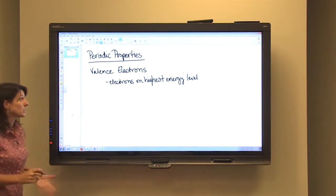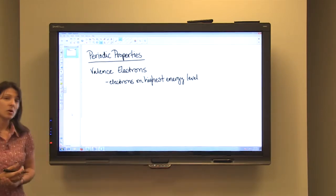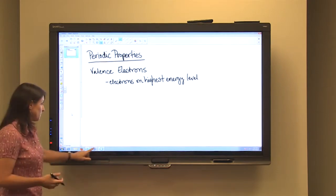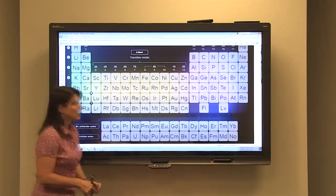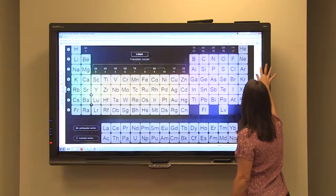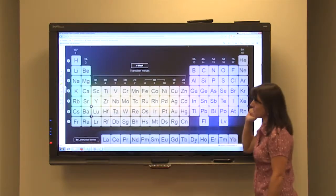The first thing we're going to discuss is valence electrons. Valence electrons are the electrons on the highest energy level of an atom. So if we look at the periodic table, the first thing to notice is the group numbers.